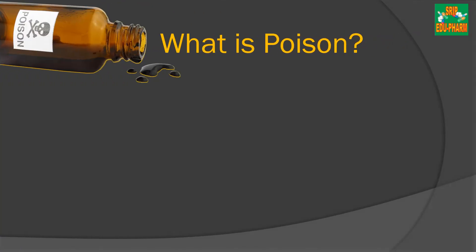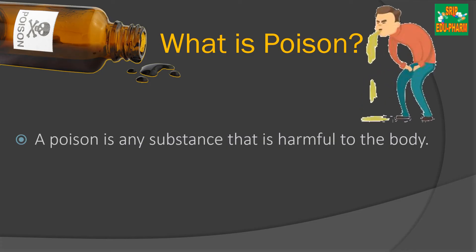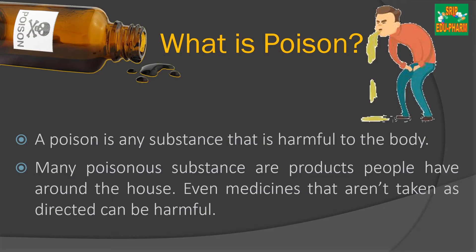First, we should know what is poison and how it can be defined. A poison can be referred to as any substance that is harmful or toxic to the body, or any tissues or organ of the body. A number of products that we have around us can be poisonous — even water can be toxic if we take it in excess. Medicines that are not taken as directed by the physician can also be harmful or toxic.